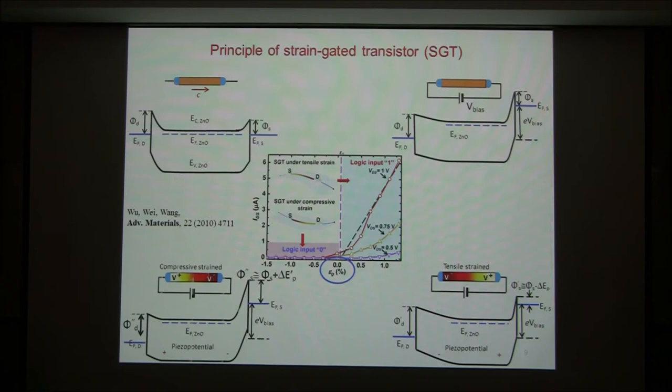When changing from tensile strain to compressive strain, the lower voltage on this side raises the barrier pipe, so the electron flow is cut off. On compressive strain, the device is off. This on/off ratio can be a few hundred to a few thousand.